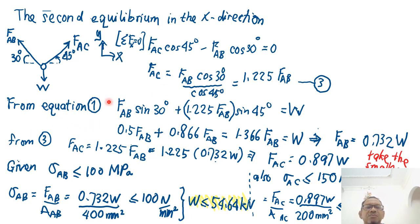And therefore I get FAC equals to FAB cos 30 divided by cos 45 degrees. So then I get FAC equals to 1.225 FAB. This is equation number 3. So now I can know that this equation number 3, I can put back into equation 1. So I said FAB sine 30 degrees, plus FAC sine 45 degrees. But I now substitute FAC equals to 1.225 FAB from equation 3 equals to W. So sine 30 degrees is 0.5, 1.225 times sine 45 degrees is 0.866. We get 1.36 FAB. So I get the relationship FAB equals to 0.732W.